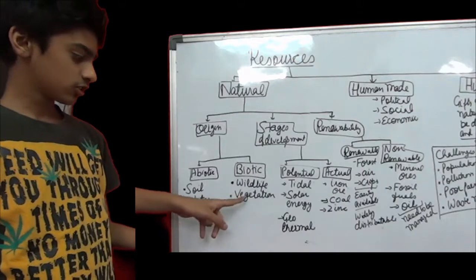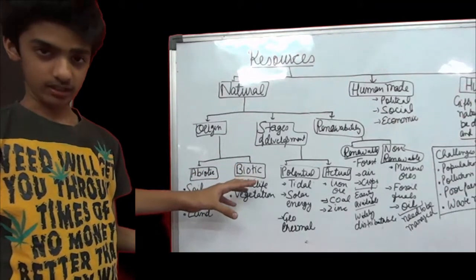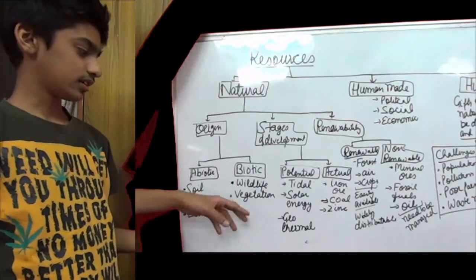Resources derived from the living environment are called biotic resources, such as wildlife, vegetation, and animals.